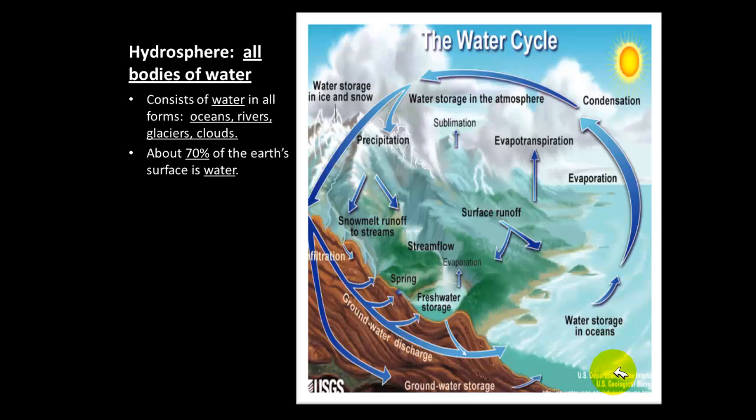Also, water actually makes up 70% of the Earth's surface. So, when we say the Hydrosphere, once again, I want you to think about all of the bodies of water on Earth, it consists in all forms. Okay, water in all of its forms. Oceans, rivers, glaciers, clouds. About 70% of the Earth's surface is water.